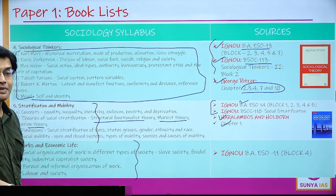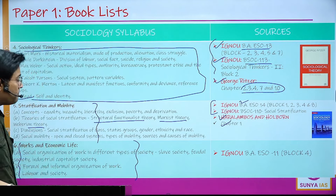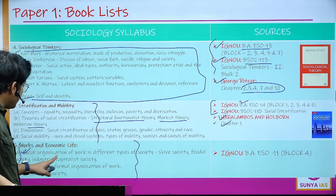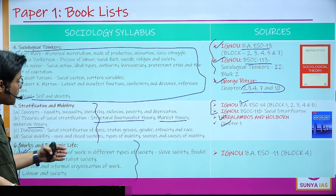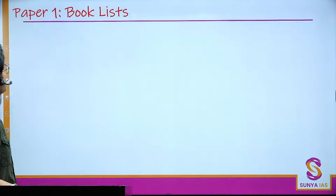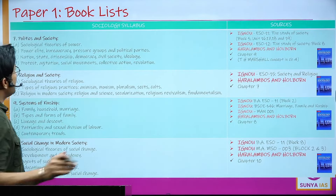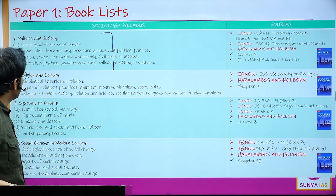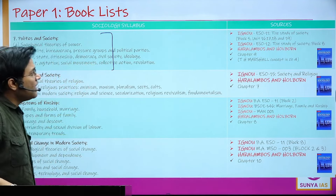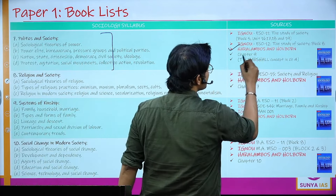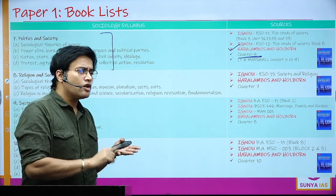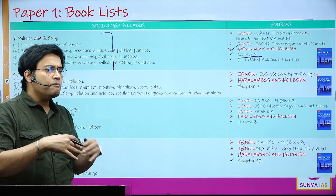Work and Economic Life has gained relevance especially since the COVID pandemic. The social organization of work in different types of society is a static topic, while formal and informal organization of work, labor and societies is dynamic — and both subtopics will reappear in Paper 2. For the Politics unit, which covers sociological theory of power, bureaucracy, pressure groups, nation-states, citizenship, protest, social movements, and collective action, refer to Haralambos Chapter 9, which covers functionalist, conflict, and Weberian perspectives very lucidly.